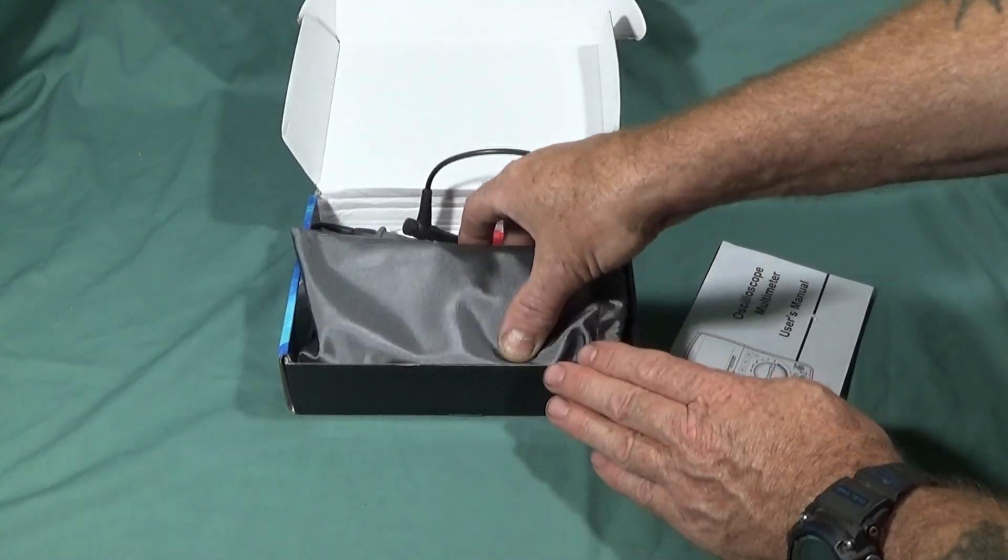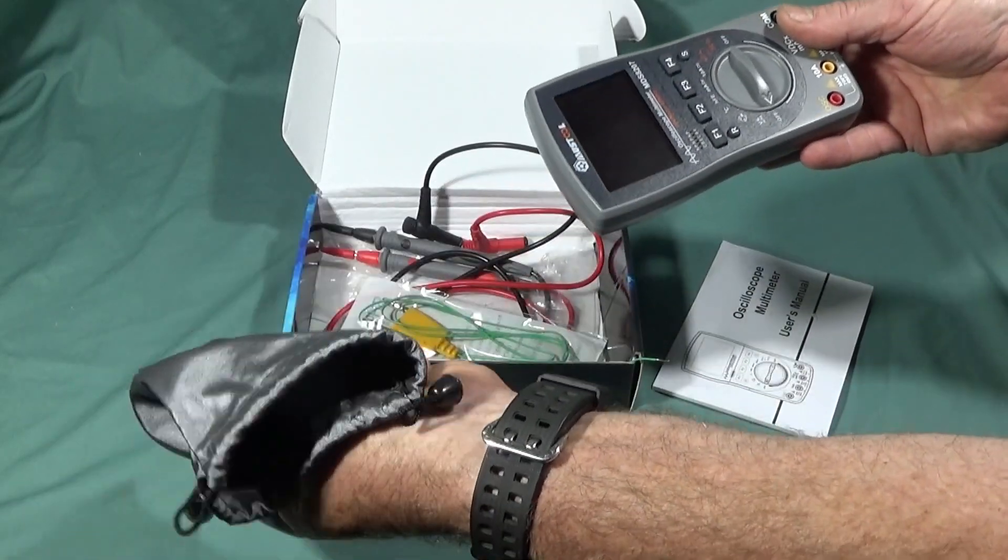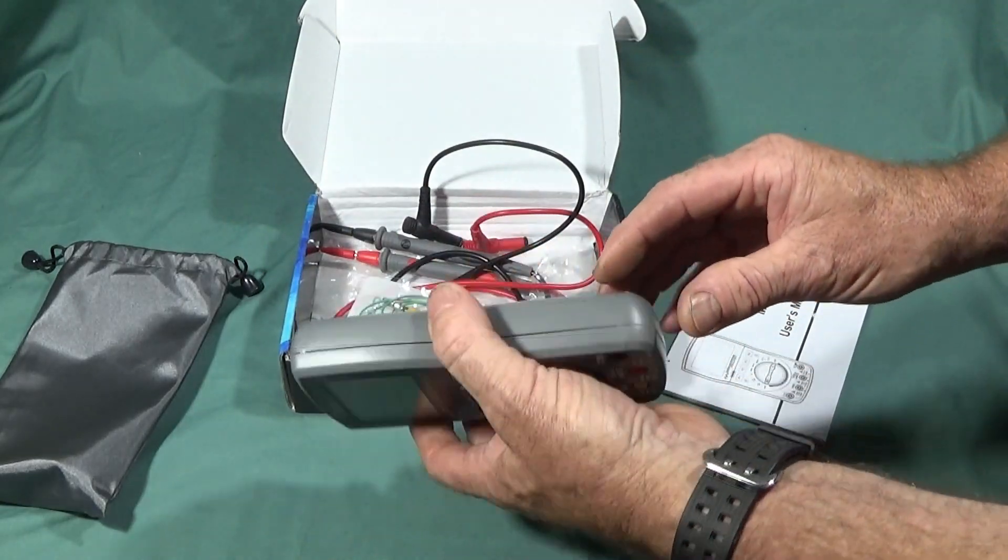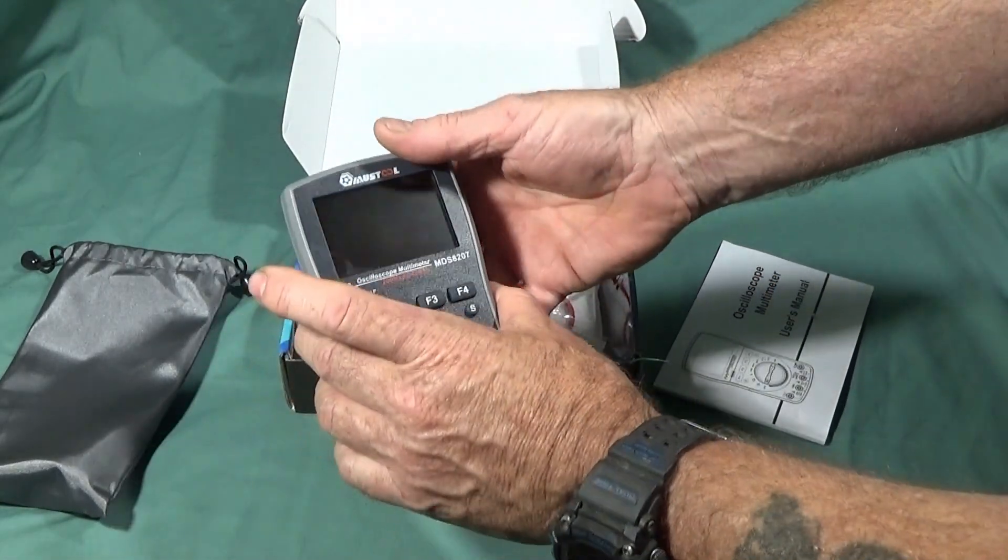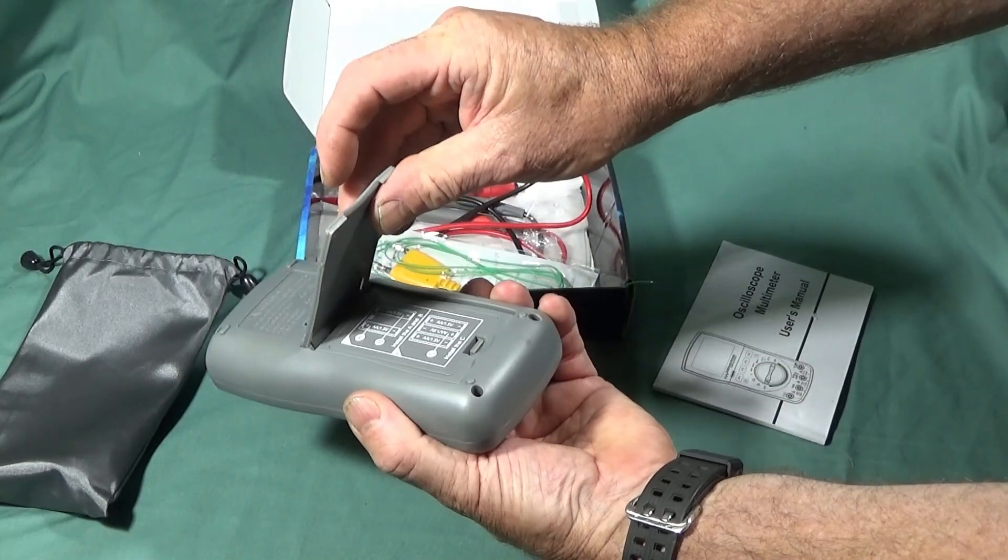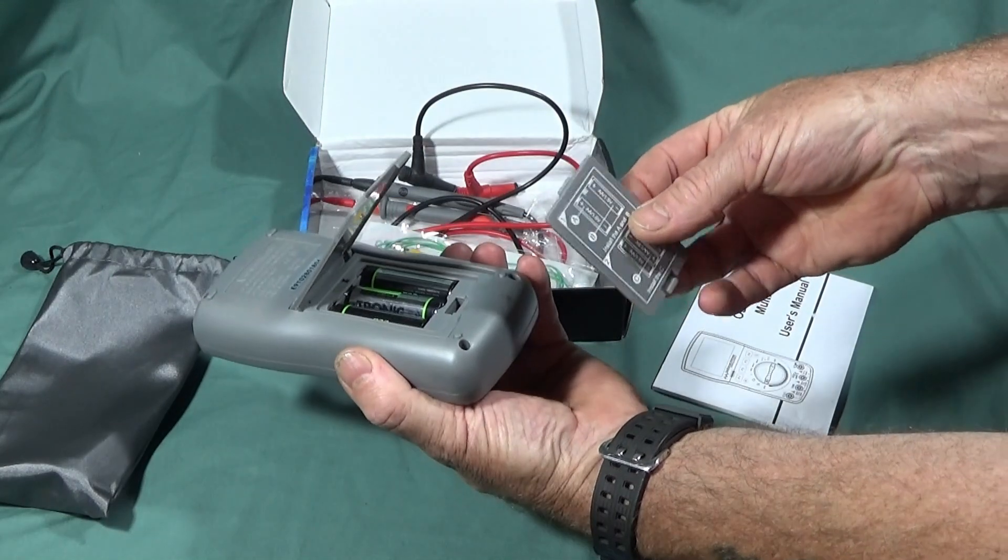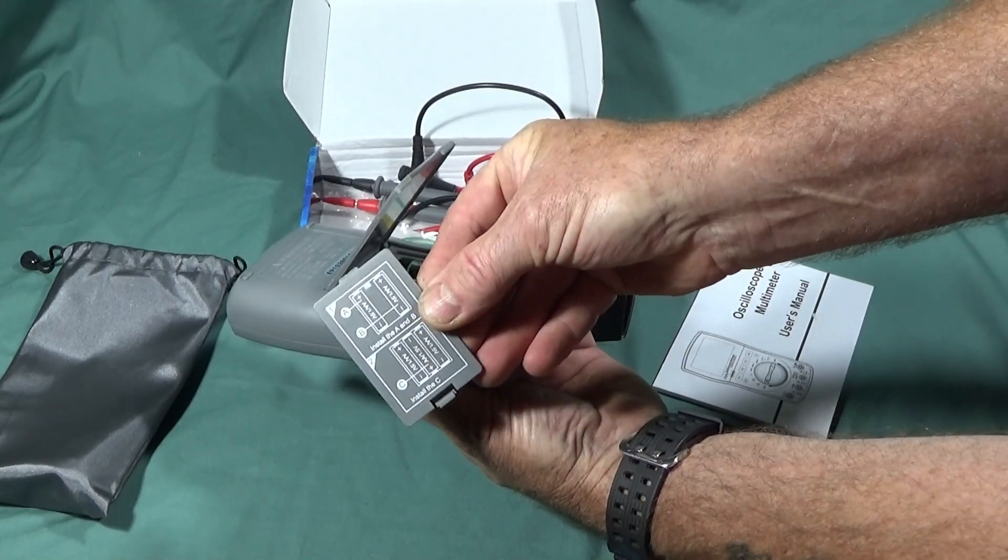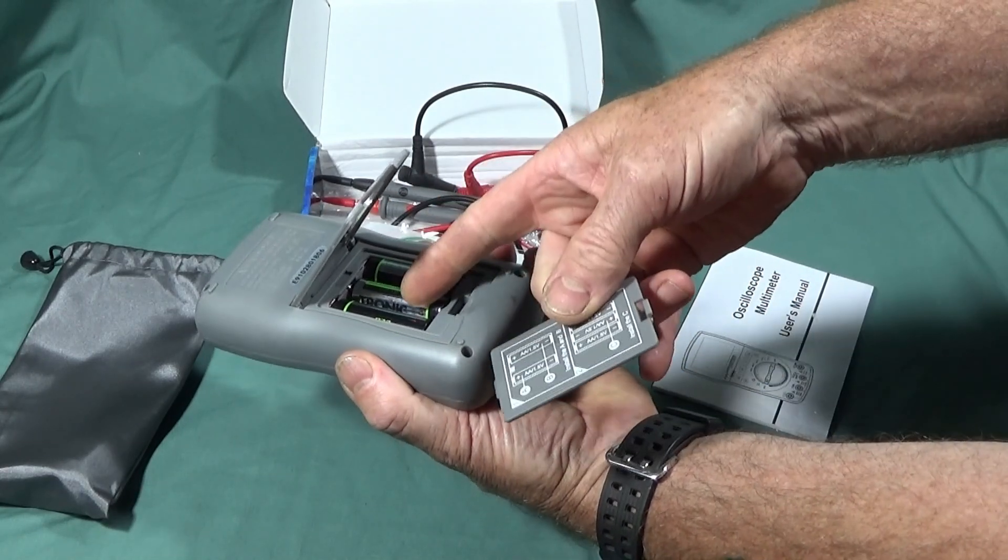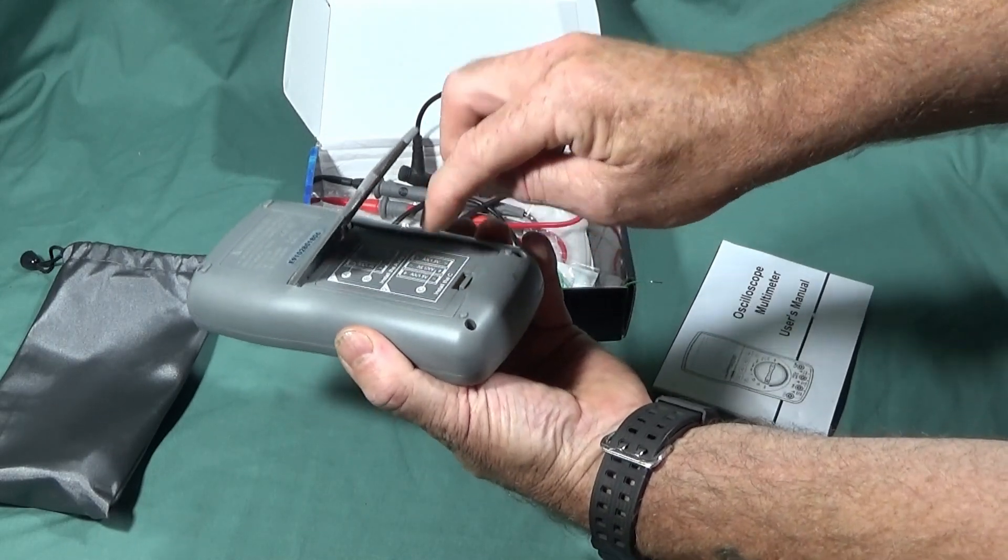The actual multimeter is in this lovely canvas-type bag with drawstrings to shut it, so that protects it nicely in the workshop. On the back of the multimeter we have the pull-out stand and the battery compartment. It takes three double-A batteries and there's a special way of inserting the batteries - it must be the two outer ones before you put the middle one in, and that's clearly specified on the instructions.